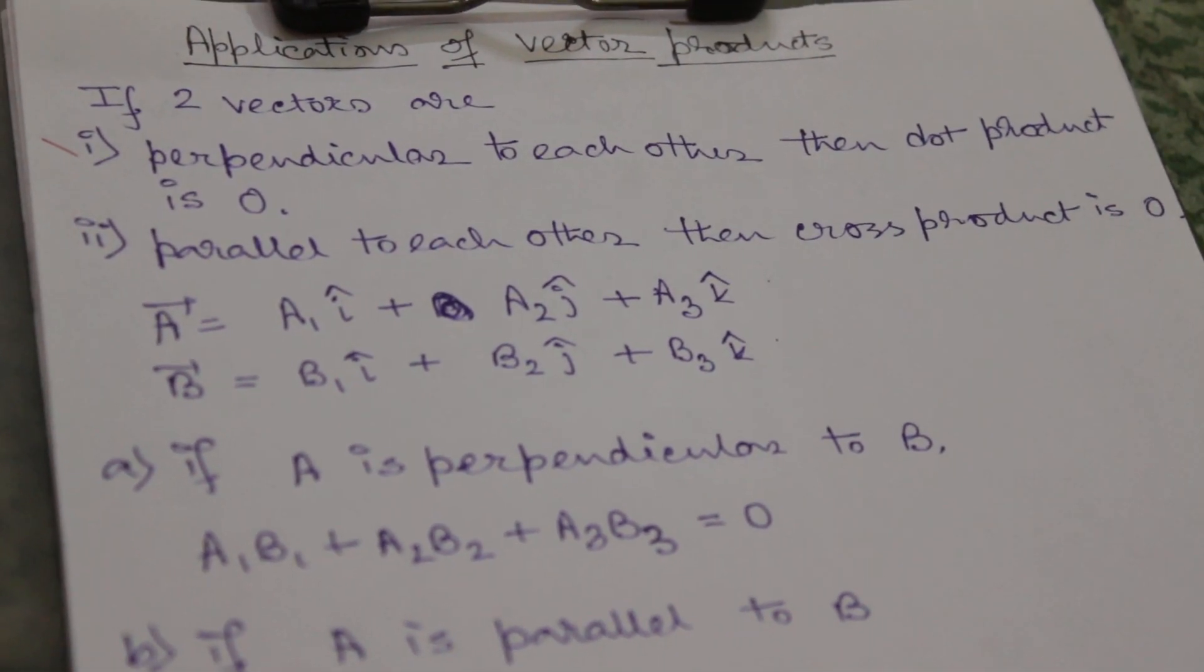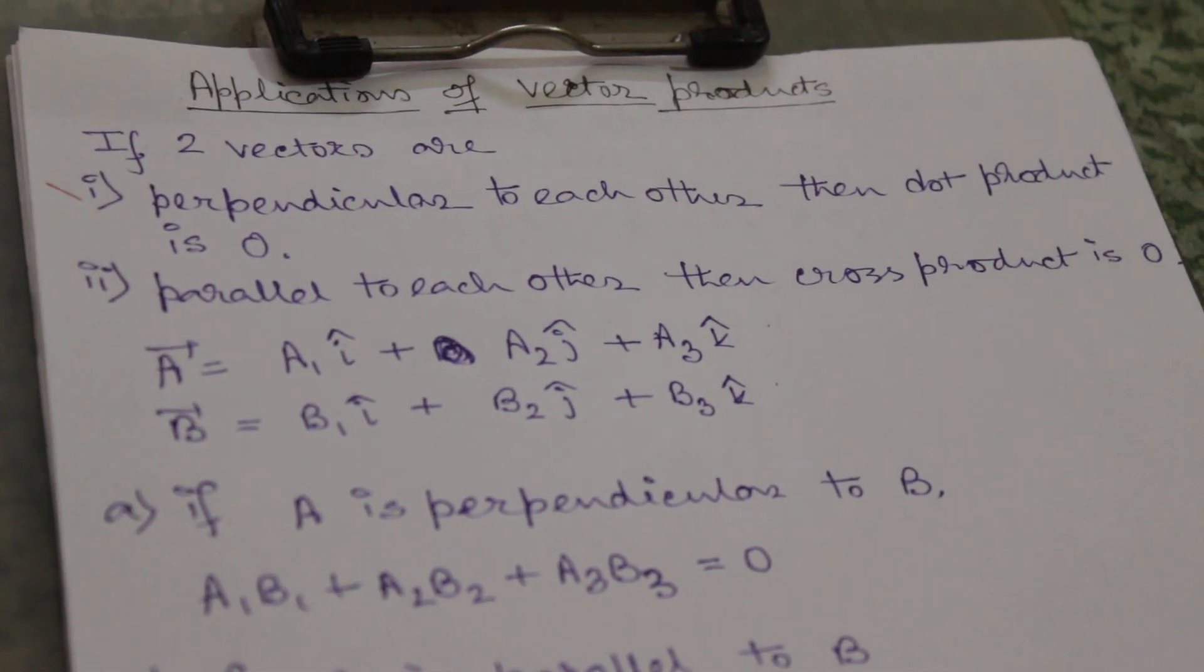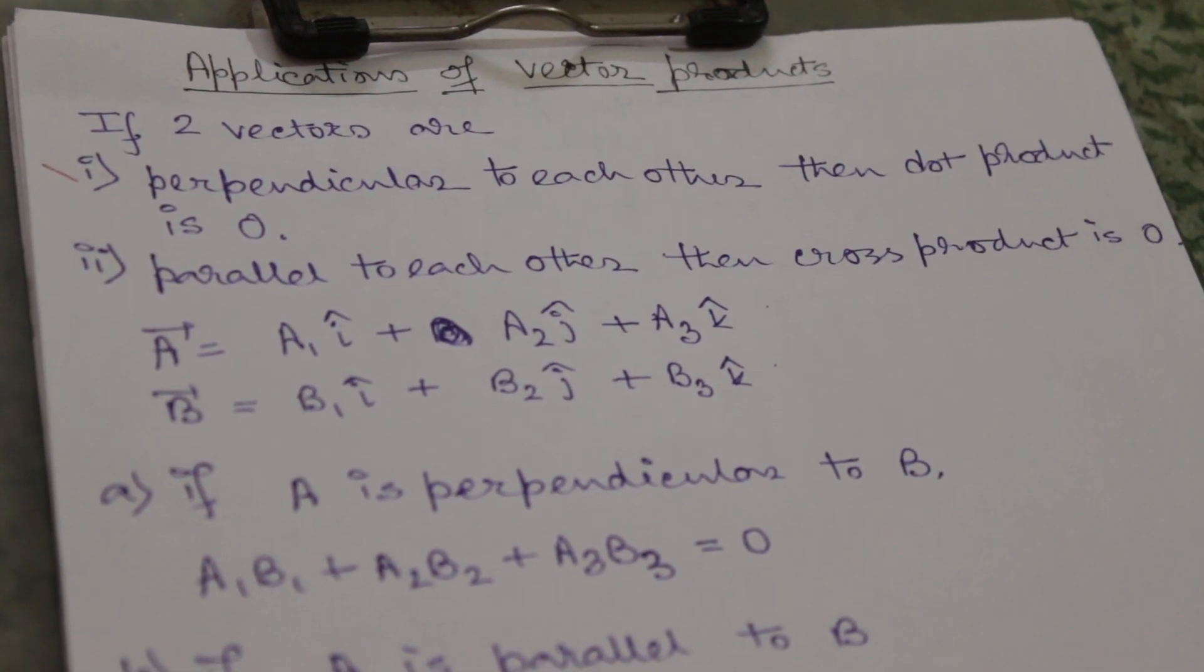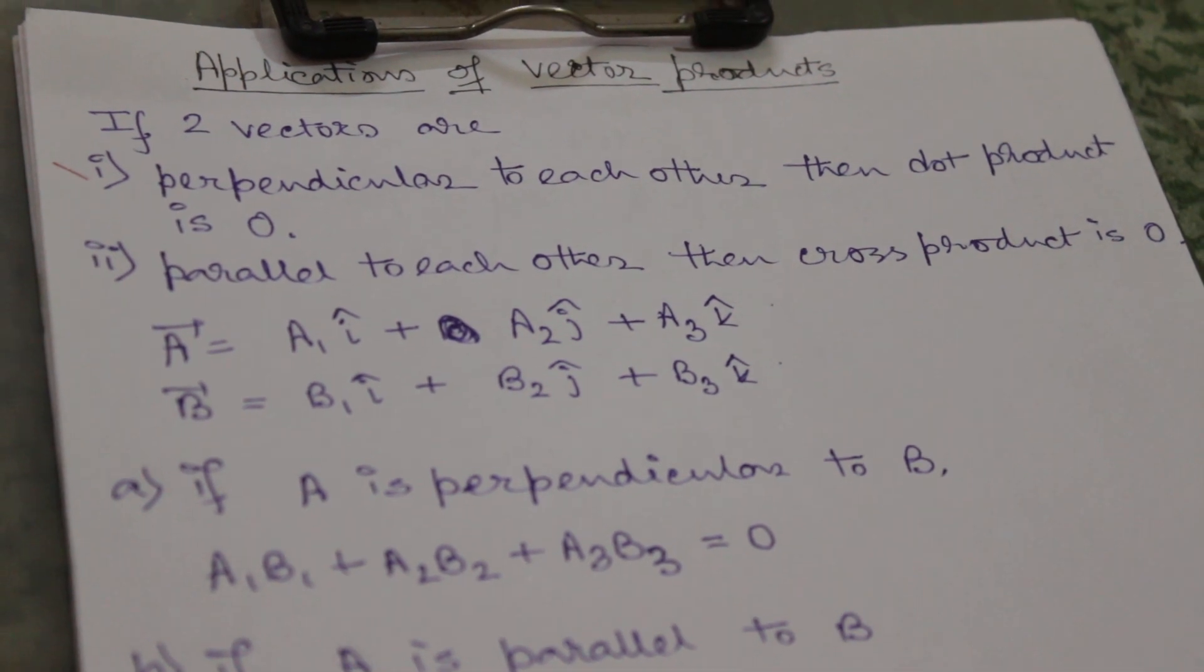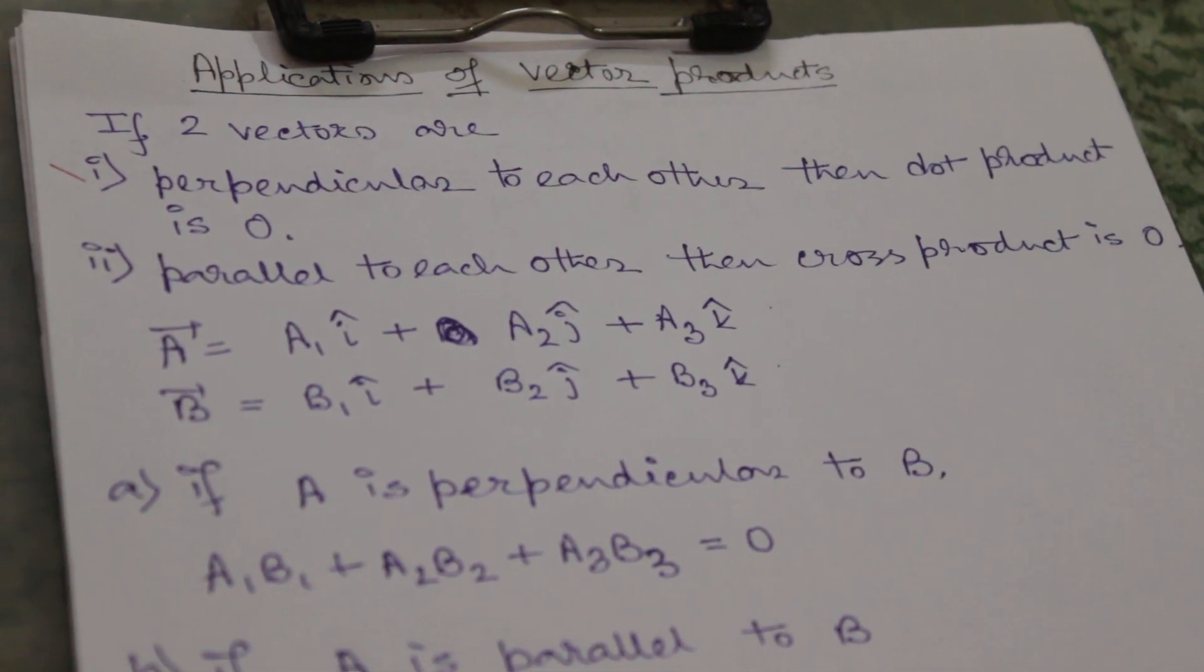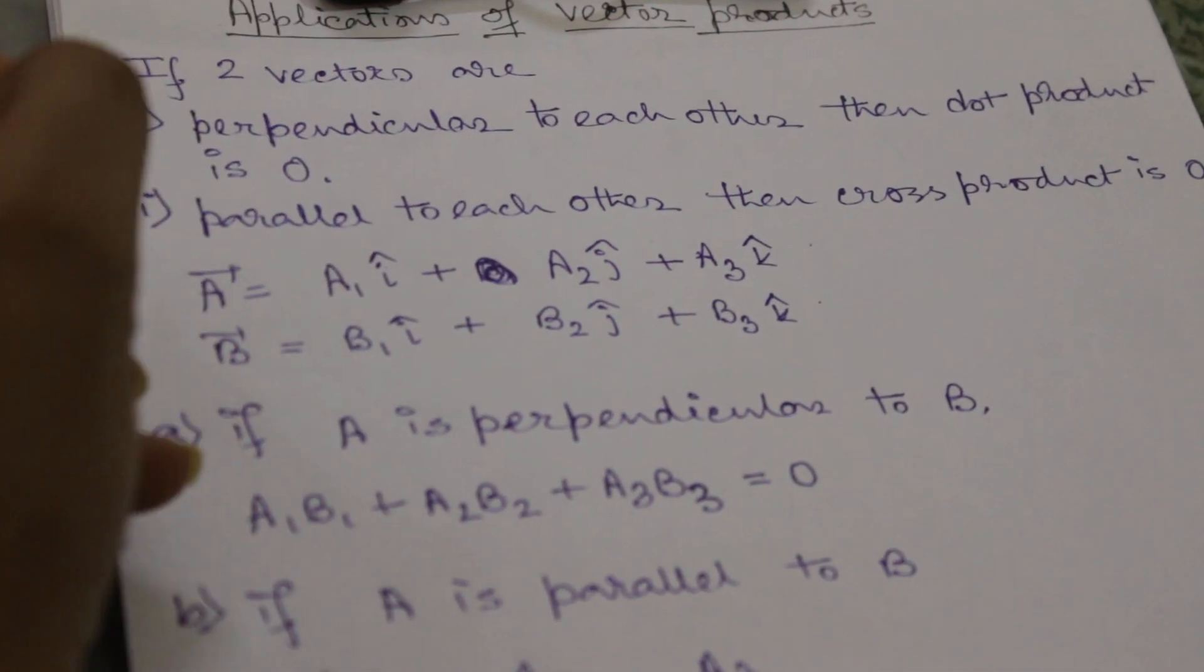And if two vectors are parallel, then their cross product will be zero because in case of parallel lines theta will be equal to zero or 180 degrees, and sine of zero and 180 degrees is zero. So let's illustrate this with some examples.